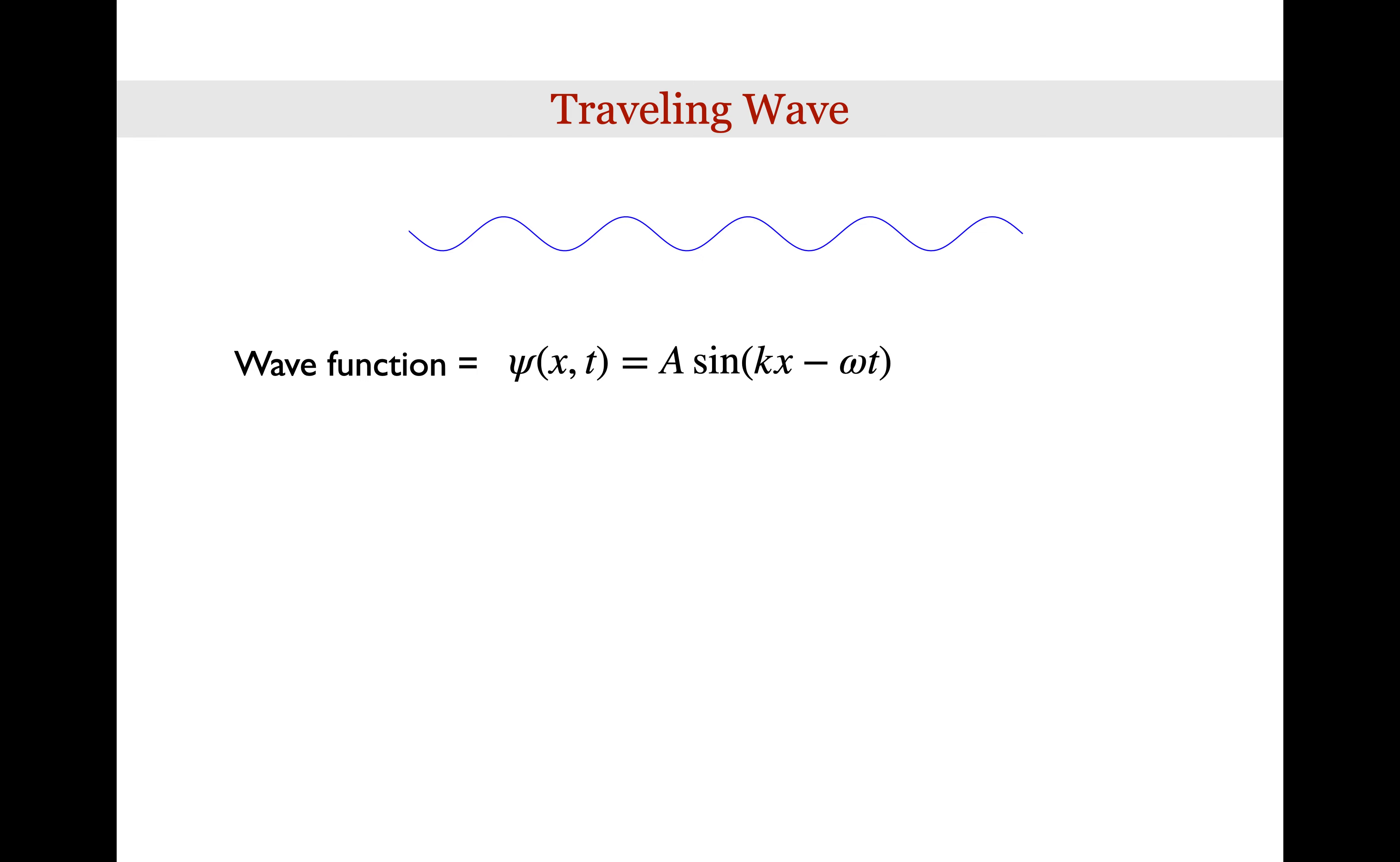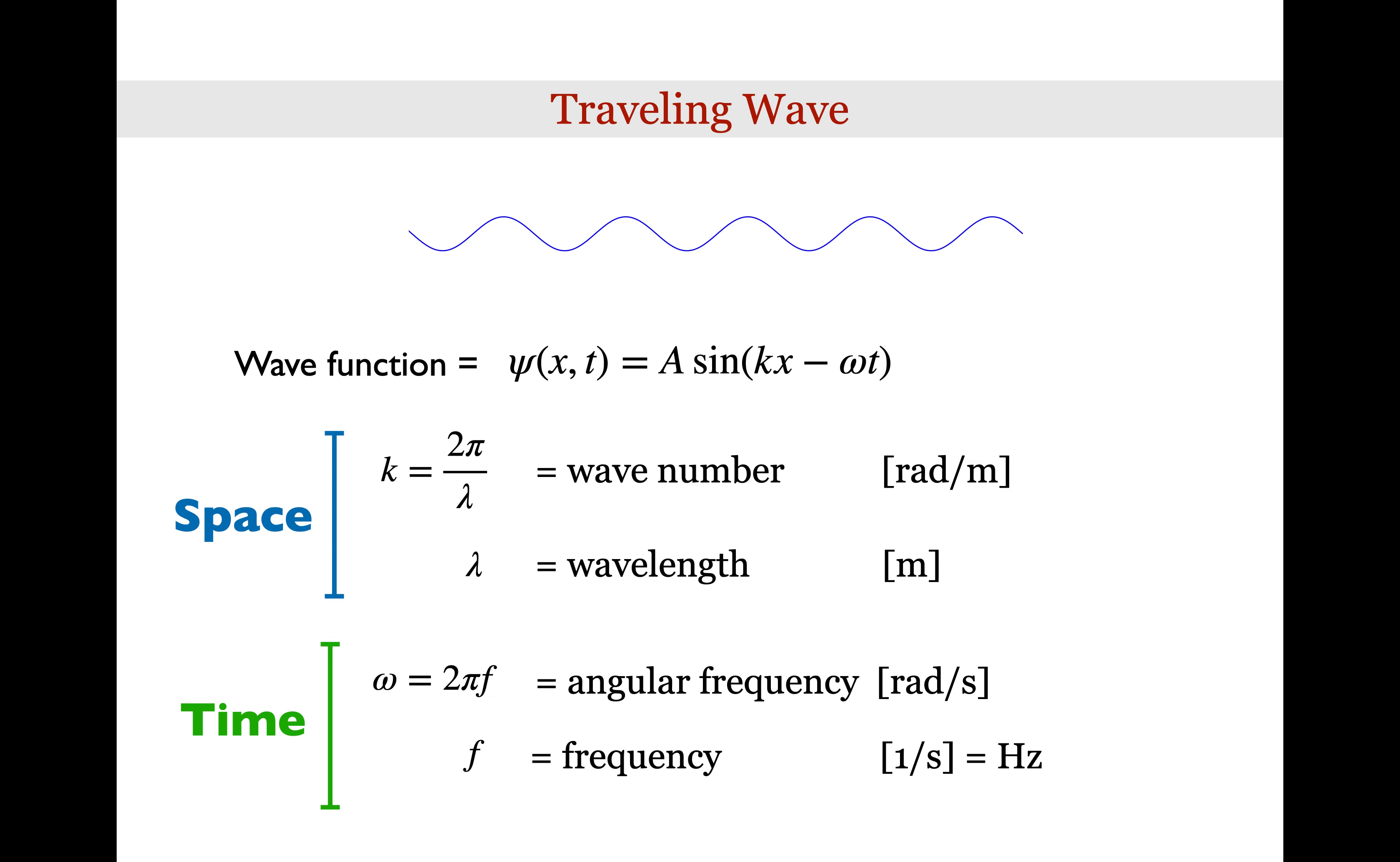The simplest type of de Broglie wave is an infinite sinusoidal traveling wave. We define the wave through a wave function using the Greek letter psi. So psi will depend on both the space x and time t. The constants k and omega in the sine function are the wave number and the angular frequency of the wave. The wave number is 2 pi over the wavelength and has units of radians per meter. The angular frequency omega is 2 pi times the standard frequency f. The angular frequency has units of radians per second and the frequency has units of 1 over seconds or hertz.